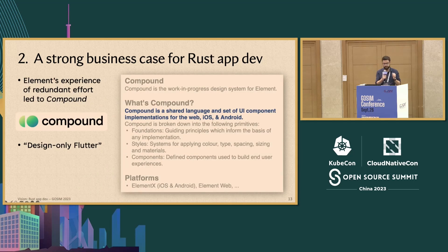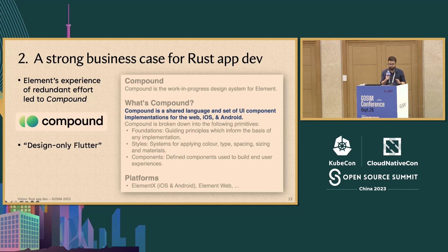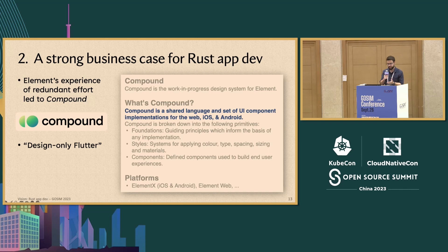Element themselves actually realized this problem and started a new effort called Compound, which I can best sum up in three words as a design-only Flutter. It's basically a shared language just for the set of UI components' designs and implementations for web, iOS, and Android. They realized this wasn't tenable, so that's why they started working on Element-X, which is partially in Rust. That's another example of folks wanting to use Rust but not being able to do so in as nice a manner as we'd like.